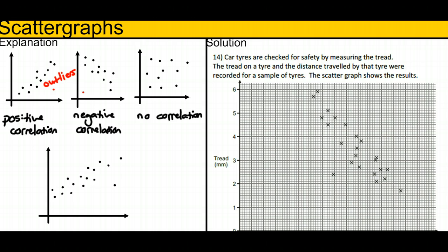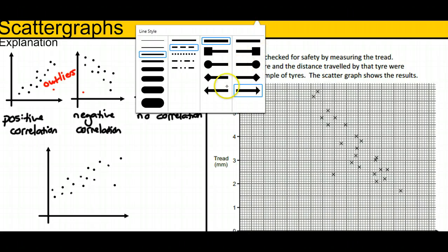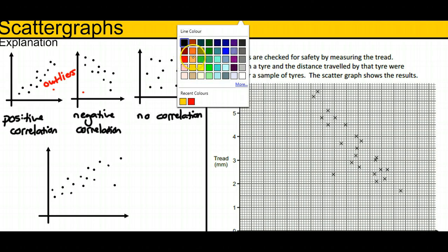Other skills you may be asked to perform on a scatter graph might be finding a line of best fit. Once you've established there is some kind of correlation, then you can conceivably put together a line of best fit. So we're going to do that with this one here at the bottom.